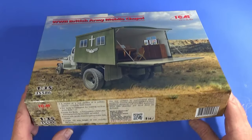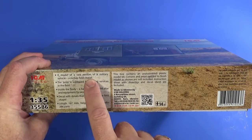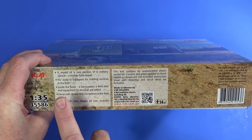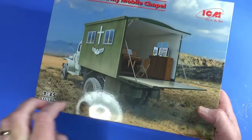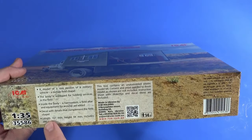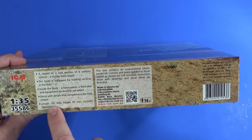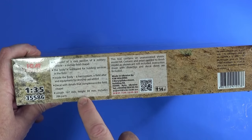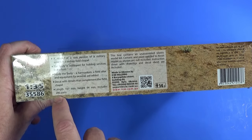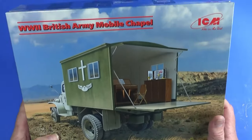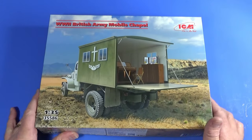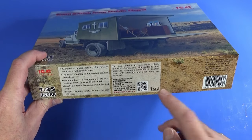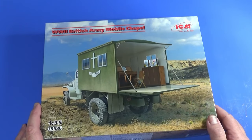On the long side here, it says a model of a rare version of a military vehicle equipped for holding services in the field. Inside we have a harmonium, a field altar and equipment for worship. The kit when completed is 167mm long, 94mm high and has 286 parts. That's a lot of parts for a vehicle like this. It's intended for model makers 14 years and older because a lot of the parts here are very small.